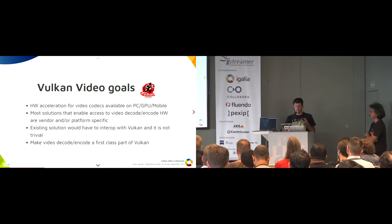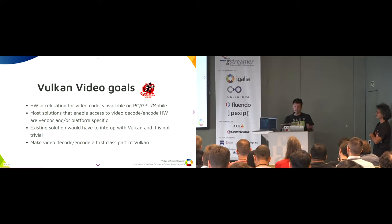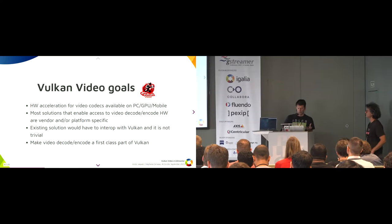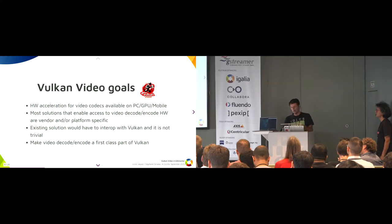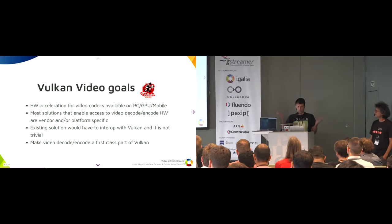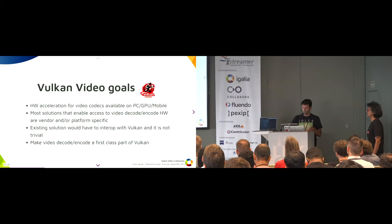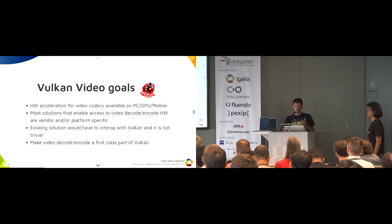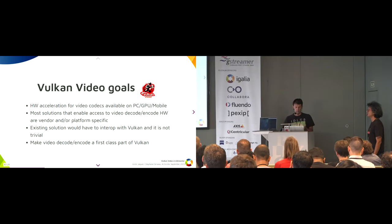Vulkan Video's goal is to give hardware acceleration to video codecs. Most solutions enabling access to video encoding and decoding with hardware are platform-specific: VA-API, V4L, or DirectX. The idea was to have multi-platform and multi-device support for hardware-accelerated video. It was also difficult to interoperate with Vulkan when doing video decoding and encoding — that's why we wanted video decoding and encoding to be a first-class part of Vulkan.